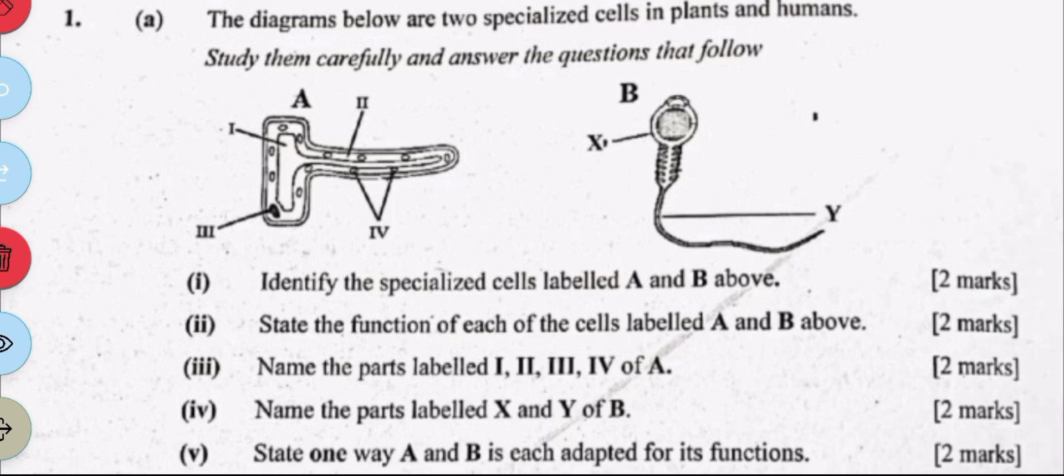So I is a vacuole, the vacuole is the biggest organelle in the plant cell. Then II is the cytoplasm, III is the nucleus which controls activities of the cell, and then IV is the mitochondrion which is the site for respiration or that produces energy.